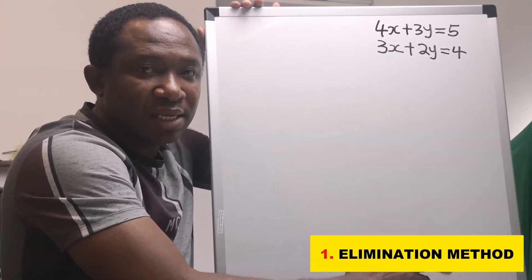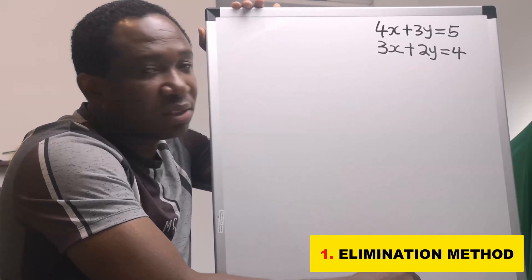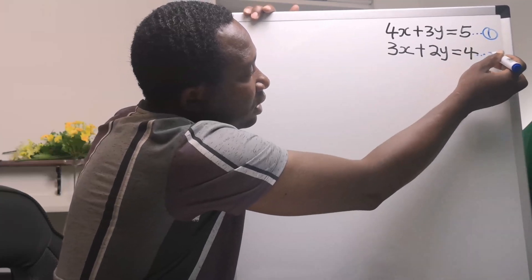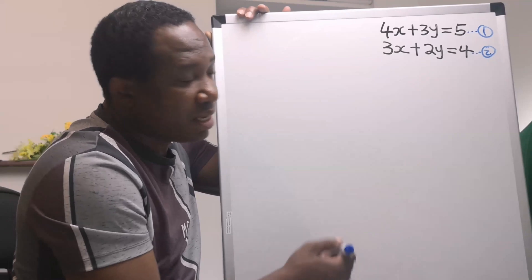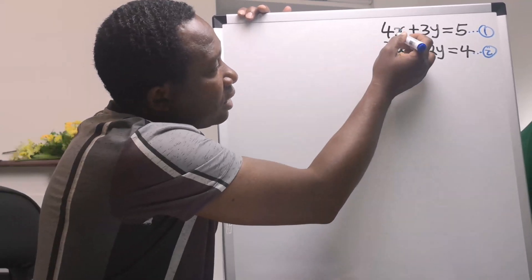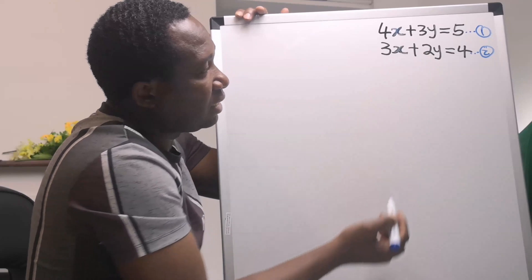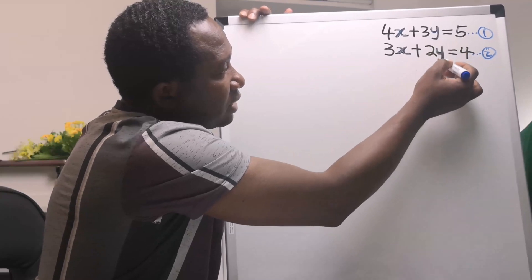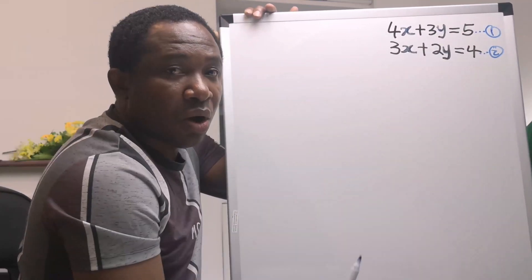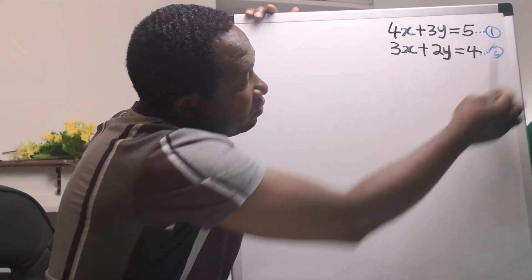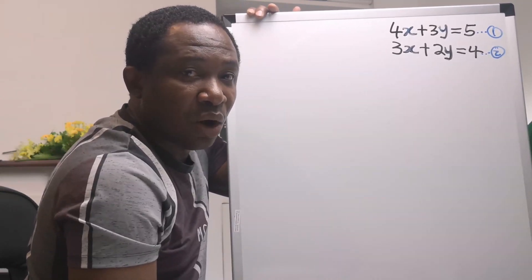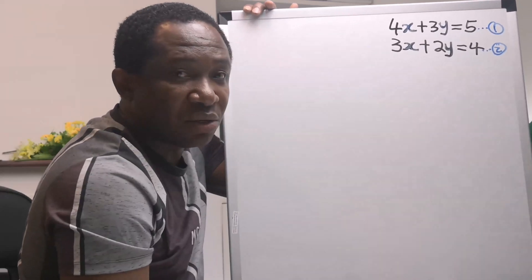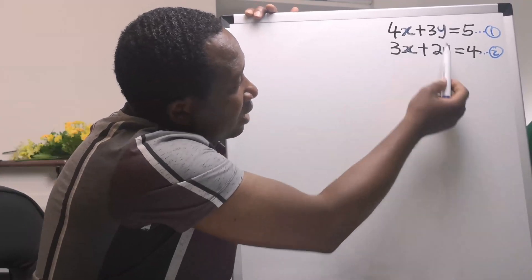Elimination method is simple when both equations are linear. This is equation 1 and this is equation 2. Next, ensure that x are vertically aligned. Also, ensure that y are vertically aligned. Next, ensure that you leave the constants on the other side of the equal sign. The constants are numbers or values without the x and y we are considering here.